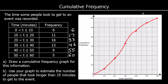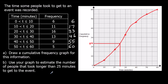The question says: use your graph to estimate the number of people that took longer than 25 minutes to get to the event. So we need to go to 25 minutes on the graph, up to our line, then across. We read the number of people — let's say that is 24 people. So 24 people took less than 25 minutes, which means 60 take away 24 — that's 36 people — took longer than 25 minutes.